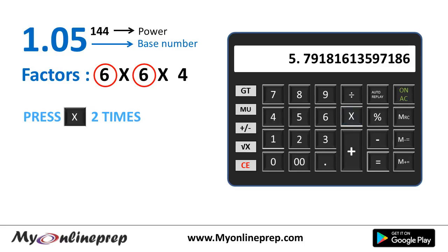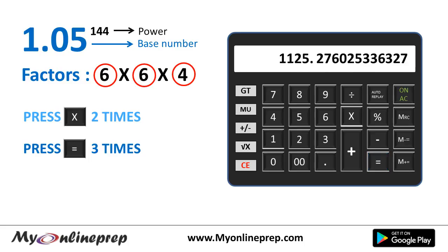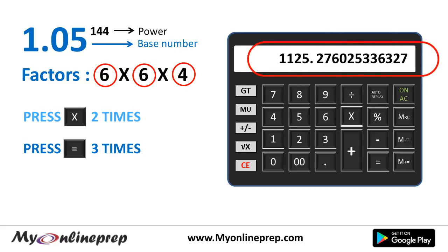The last factor is 4, so how many times do we press equals? 3 times — one less than 4. Press equals: 1, 2, 3. Now look at the screen — this is our answer for 1.05 to the power 144.